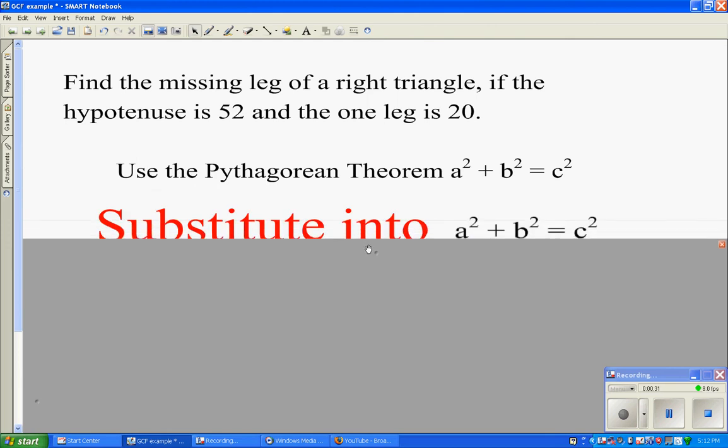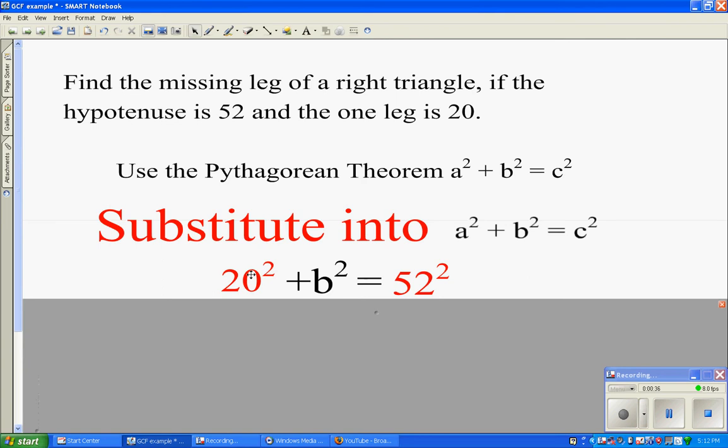So now we substitute into a squared plus b squared equals c squared. In red, I put the values, so 20 squared plus b squared, what we're looking for, equals 52 squared.